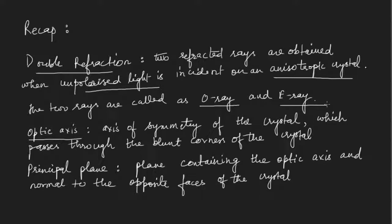We call it the ordinary ray because it follows Snell's law, whereas the E-ray has a refractive index such that it does not follow Snell's law. To understand the polarization of the O-ray and E-ray, we need some reference, so we need to define the optic axis and the principal plane of the crystal.